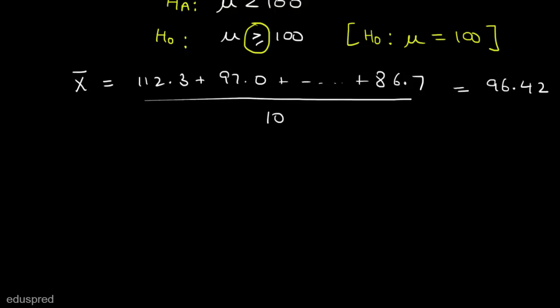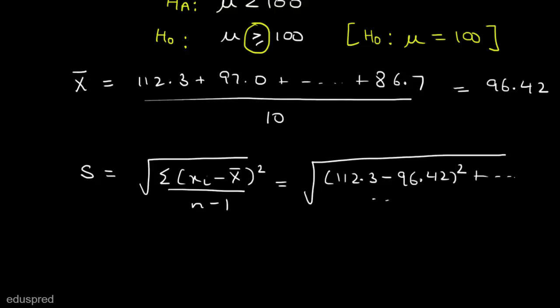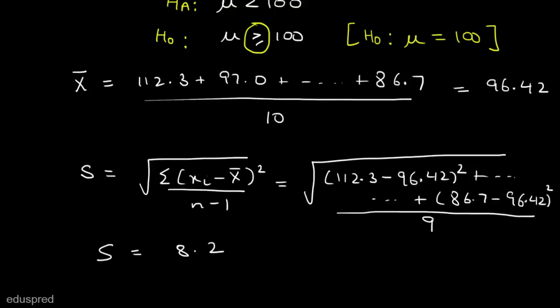Now we can also calculate the sample standard deviation, denoted by s. So s is equal to the square root of the summation of (xi minus x-bar) squared, divided by n minus 1. This equals the square root of the sum of terms like (112.3 minus 96.42) squared through (86.7 minus 96.42) squared, all divided by 10 minus 1, which is 9. Solving this, the sample standard deviation equals 8.2586.